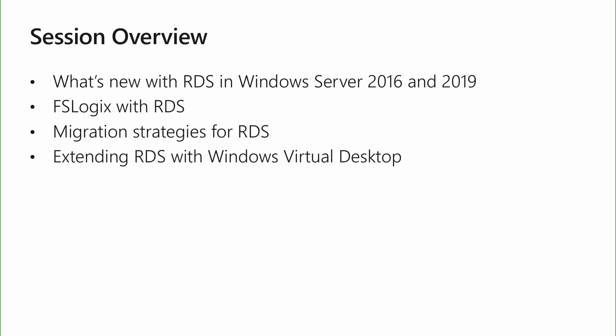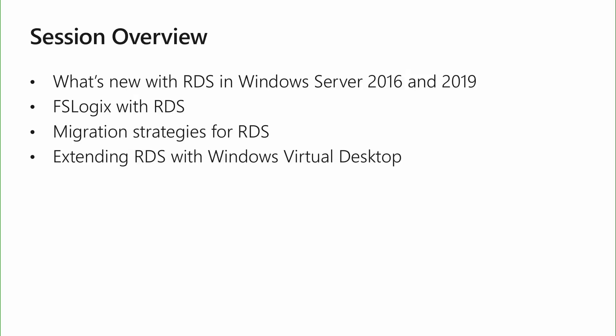First, we will talk about what's improved in the core product of RDS both 2016 and 2019. You can use these wherever you are, whether it's on-premises or on the Cloud. We released the newest version of Remote Desktop Services RDS 2019 in October of 2019 with Windows Server. RDS 2019 builds on the strong foundation of RDS 2016, letting you rapidly deploy on-premises or in the Cloud. We also recognize there's still an opportunity to improve non-persistent and complex virtualization environments at scale. So we'll talk about an acquisition of FSLogix and how you can leverage all the benefits in your RDS environment today.